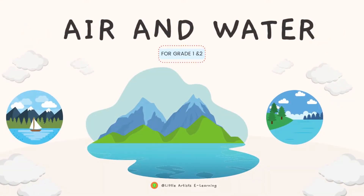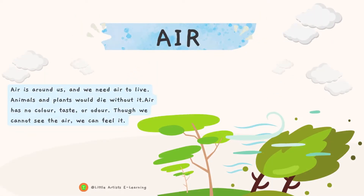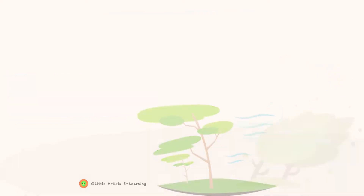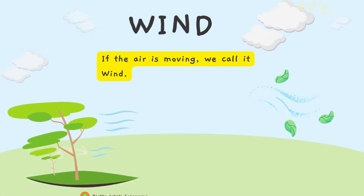Air and water. Air is around us and we need air to live. Animals and plants would die without it. Air has no color, taste, or odor. Though we cannot see the air, we can feel it.